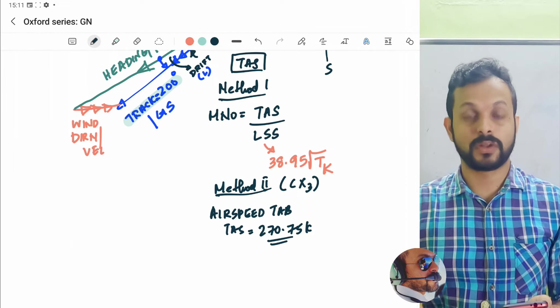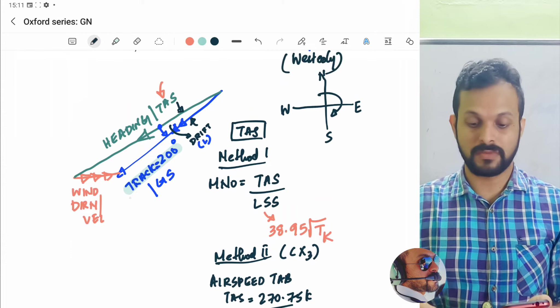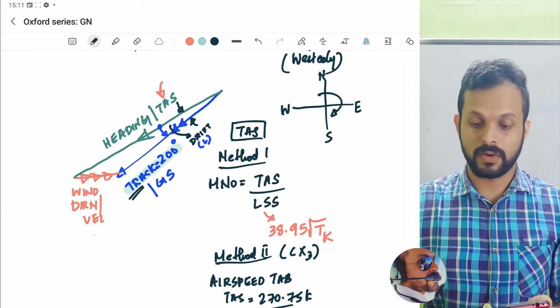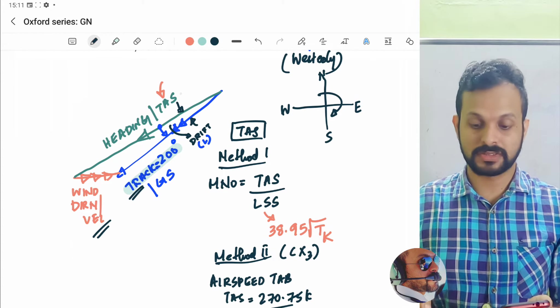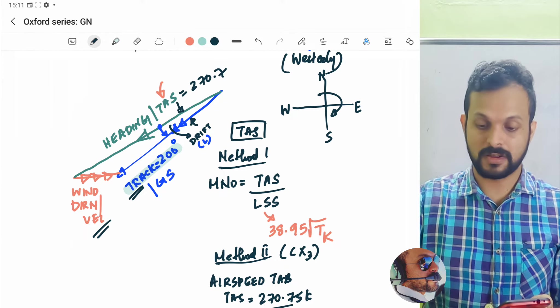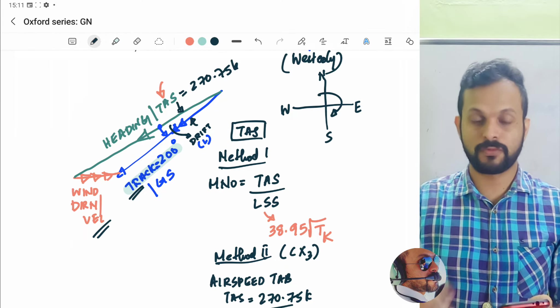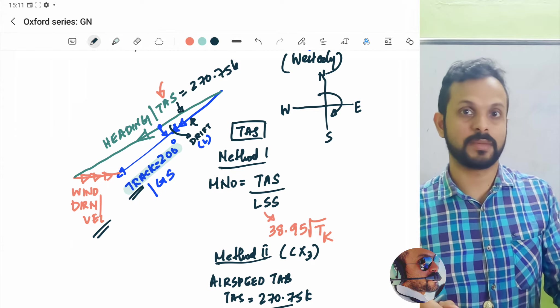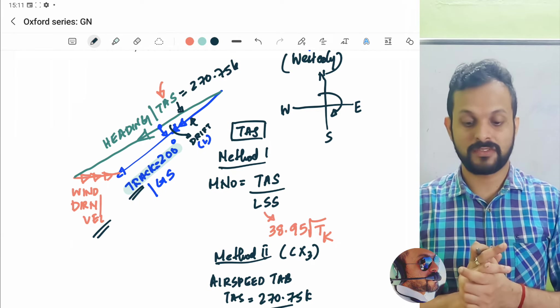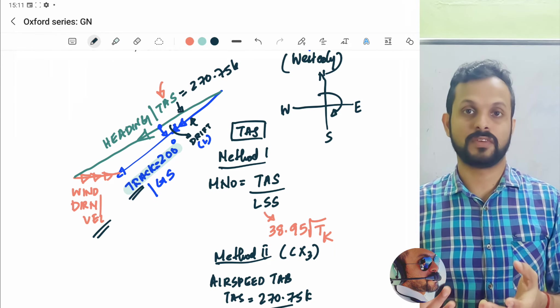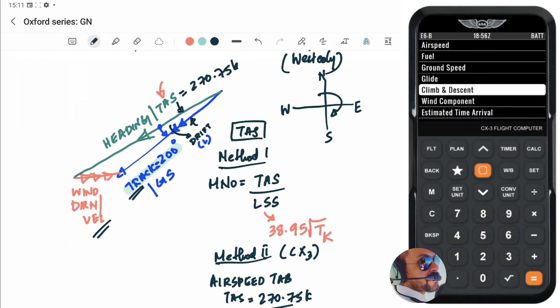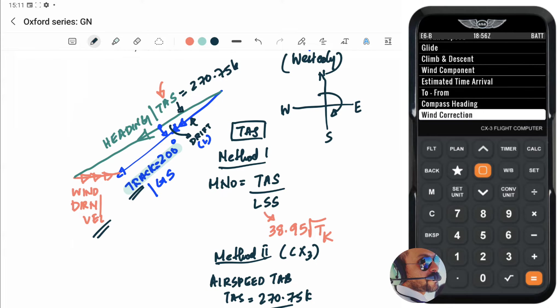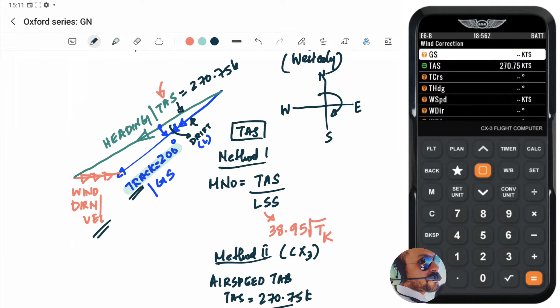Now, once the TAS is known, now you have all the four parameters. Namely, we have the track, we have the wind direction, wind velocity and now we have the TAS to be 270 decimal 75 knots. So all four elements of the wind velocity triangle out of the six elements is known, which means you are left with heading and ground speed, which you can eventually find out. And for that, we need to go back and navigate to wind correction tab all the way down.